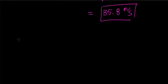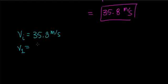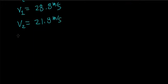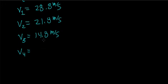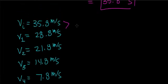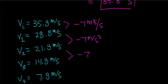As a final check: starting at 35.8 m/s, after each second of slowing down the velocity drops by 7 m/s. So the sequence is 35.8 → 28.8 → 21.8 → 14.8 → 7.8 → 0.8 m/s. During each one-second interval, the velocity changes by 7 meters per second per second, which confirms the object is decelerating with a constant acceleration of 7 m/s².